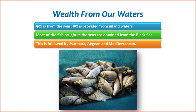5. Regulations — the Turkish government has implemented regulations to manage and sustain fisheries resources. These regulations cover fishing seasons, catch limits, and gear restrictions to prevent overfishing and protect the marine ecosystem. 6. Economic Contribution — the fishing industry contributes to both local economies and the national economy, providing employment opportunities for coastal communities and supporting related sectors such as processing, distribution, and export. 7. Black Sea Fishing — the Black Sea, with its unique ecosystem, is also an important fishing area. However, the Black Sea faces challenges such as overfishing and environmental issues that impact fish stocks. 8. Inland Fishing — Turkey's numerous rivers and lakes support inland fishing activities. Common freshwater species include trout, carp, pike, and catfish.